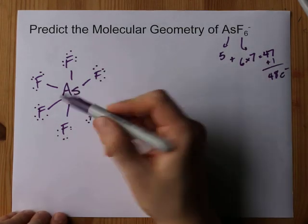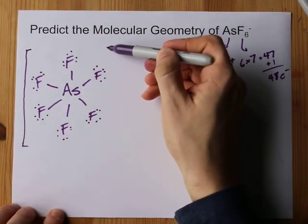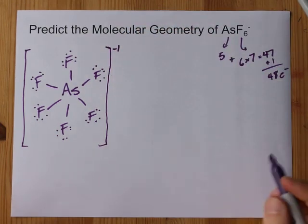There's no extras to dump on the center atom. And officially, in a Lewis structure, if there's a charge, you're supposed to put it in square brackets with that minus charge written on the outside. Look at me. I'm perfect.